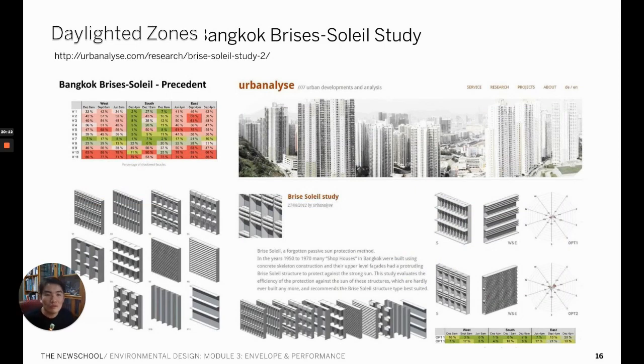This is an interesting study from the urbanalayze.com website. It shows a study of different brise-soleil design and its impact based on the particular climate location, which is Hong Kong in this case. By looking at this chart that shows the percentage of the shadow facade, you can see certain design options are successful, especially for the south facade. Of course, the chart will result in different data when studied in different locations. But you can see based on what factor you can determine which shading design works the best.